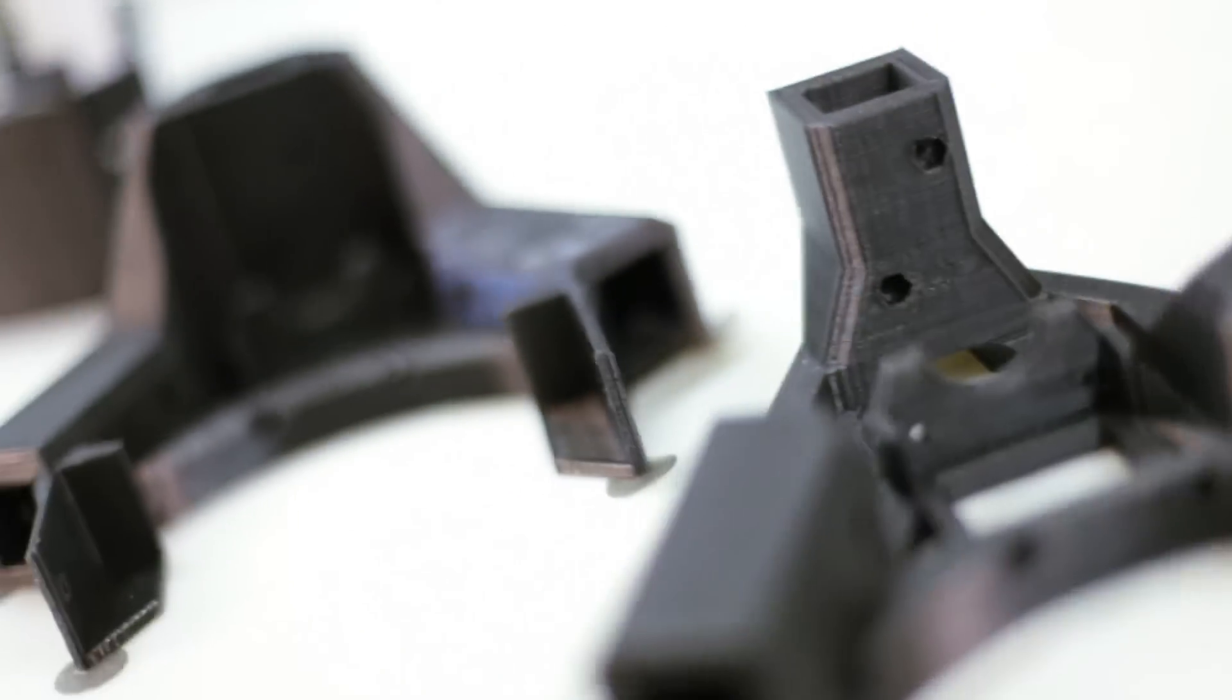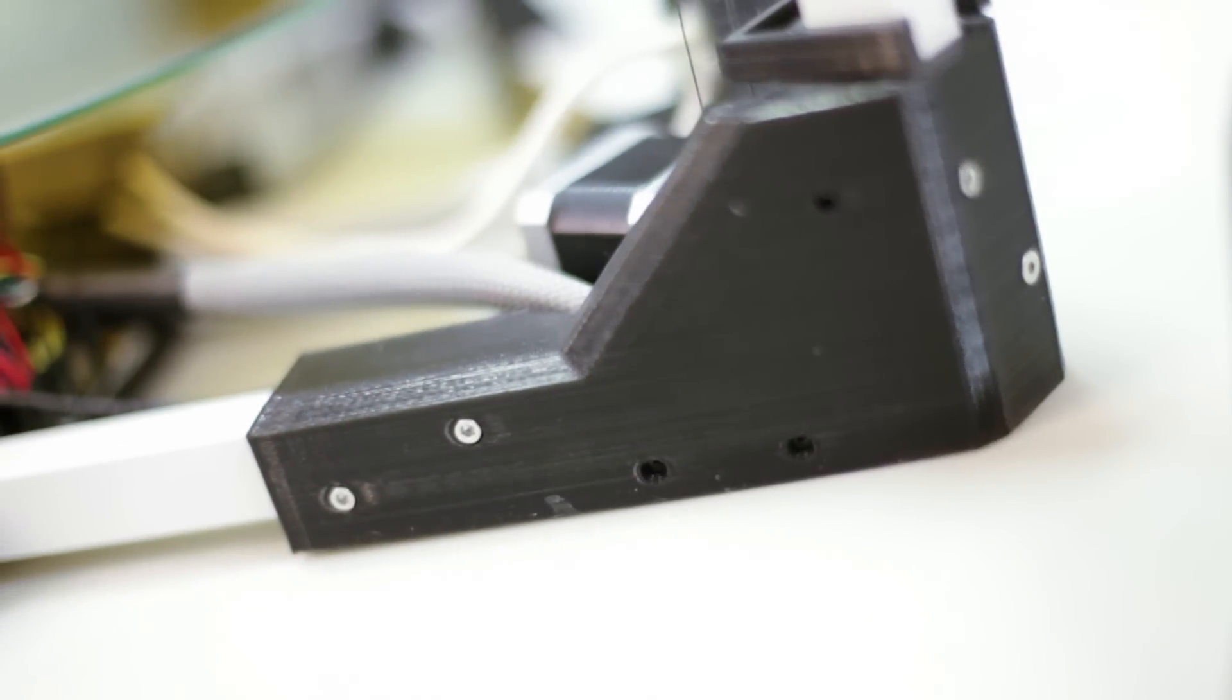To create a self-replicating printer with such a large build volume, we needed to go through several design iterations to reach the required rigidity. The result is a unibody steel reinforced corner.